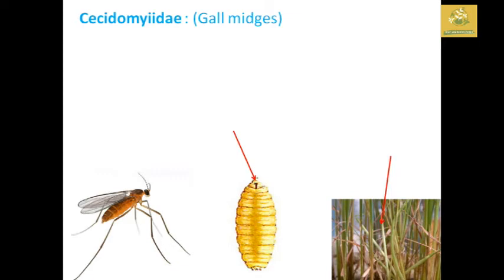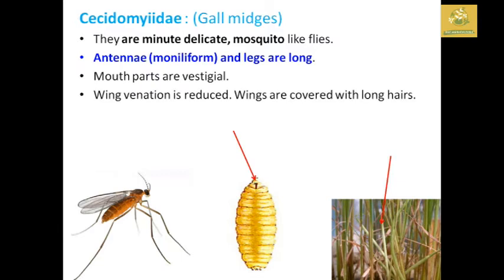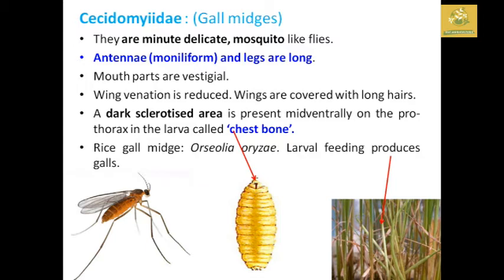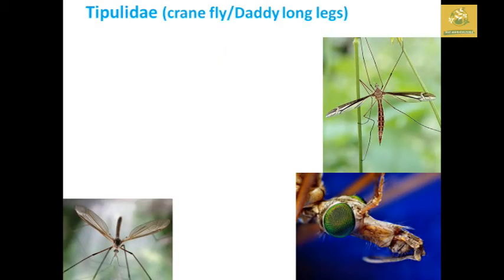Cecidomyiidae comprises gall midges. They are minor, delicate, mosquito-like flies with similar characteristics but differ in having a moniliform antenna. Legs are long as in mosquitoes. Mouthparts are vestigial and wing venation is reduced. Wings are covered with long hair. A distinct structure called the sternal spatula (chest bone) is present immediately on the prothorax in the larva. The rice gall midge larva produces galls in rice.